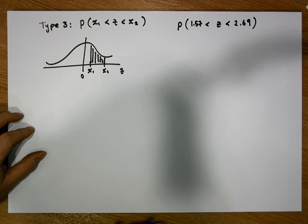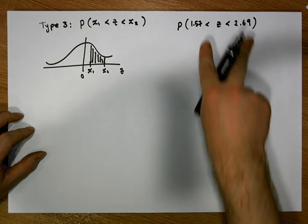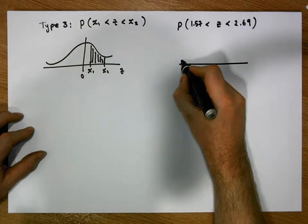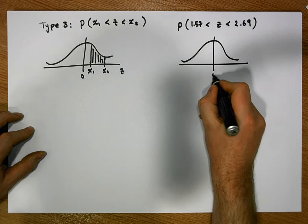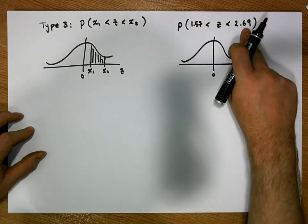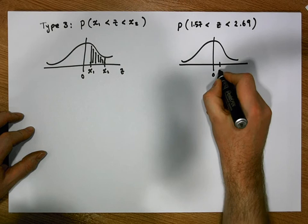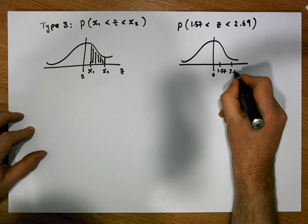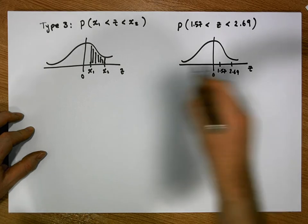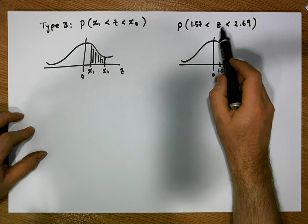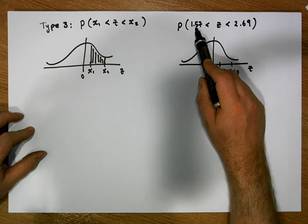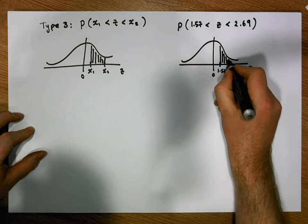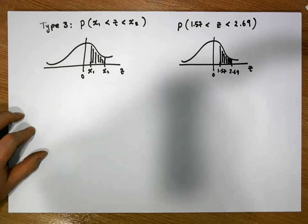The first thing we will always do is draw the standard normal distribution and place the bounds on it. So we draw the standard normal distribution centred on zero. Our two bounds are 1.57 and 2.69 — 1.57 is about here and 2.69 is about here. The horizontal axis is the z-axis, and we are interested in the area under the curve that resides between those two values.